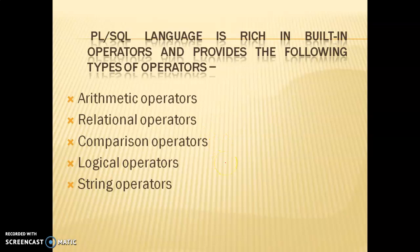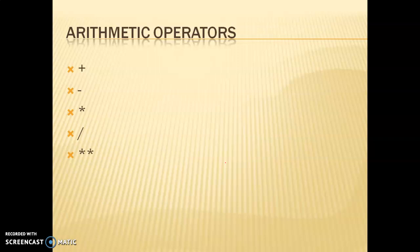In PL/SQL we have basically five types of operators: arithmetic operators, relational operators, comparison operators, logical operators, and string operators. In every operator there are two things — the operand and the operation. The operand is the value on which the operation is performed, and the operation is the mathematical or logical task performed on the operand.